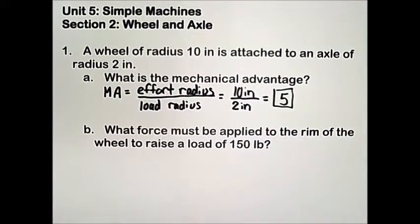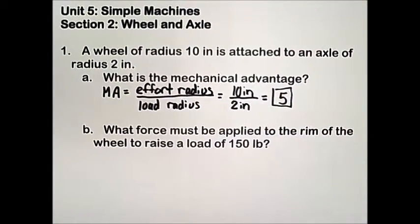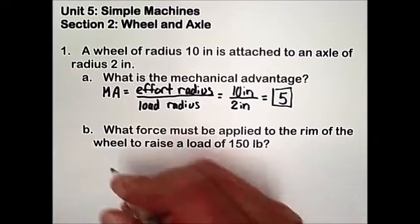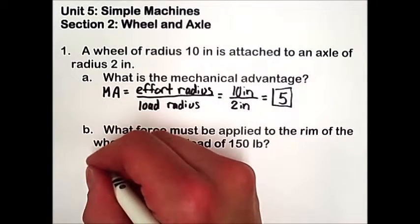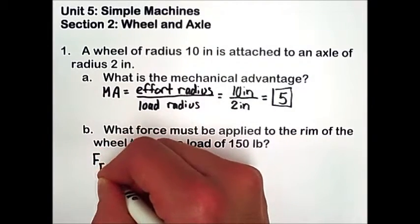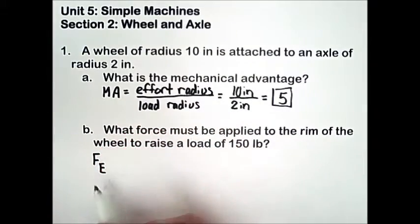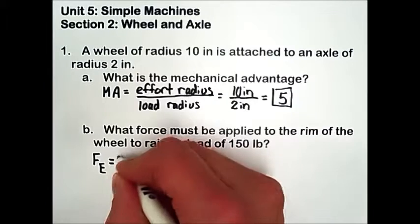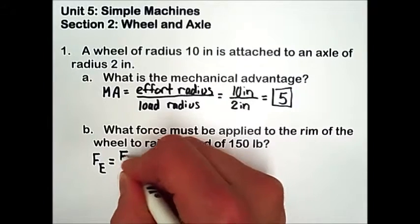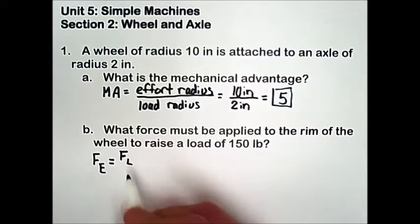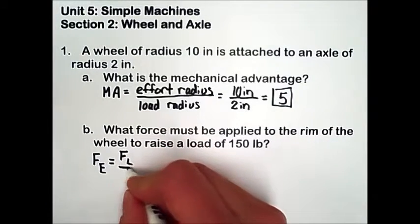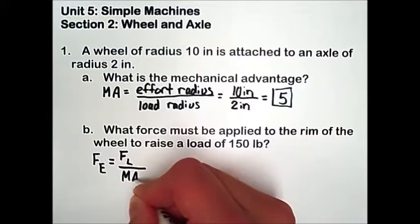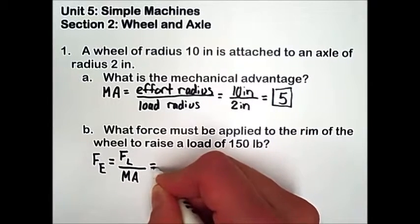Part B asks us what force must be applied to the rim of the wheel to raise a load of 150 pounds. So our effort force, represented by F sub E, is equal to the load force, represented by F sub L, divided by the mechanical advantage.